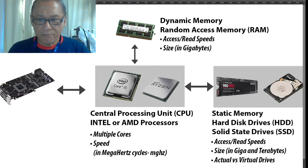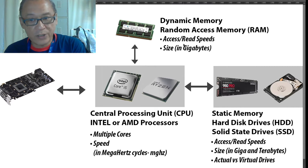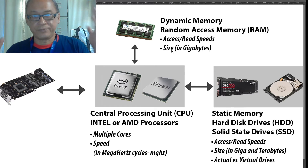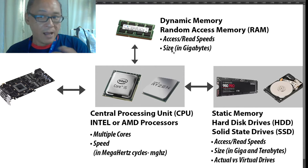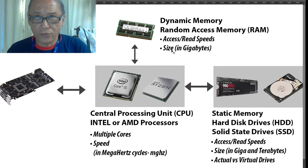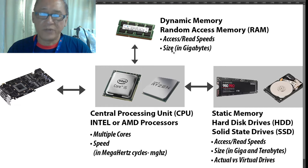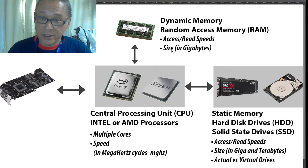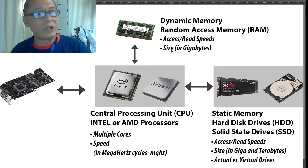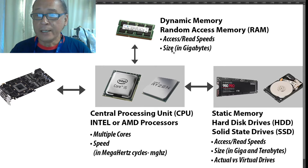RAM, or random access memory, has similar specifications to your hard disk — it has access and read speeds which are very fast, and it has size in gigabytes. More is better. There is a minimum size your computer needs and there is an optimum size. I always buy more than I need. Most of the software I use for desktop publishing uses 16 gigabytes. But some processes require more — those workstations have 128 gigabytes or 64 gigabytes of RAM, mostly for compositing, 3D animation, and game design.